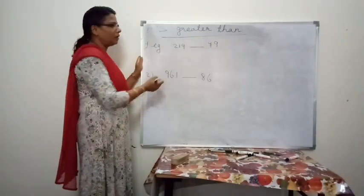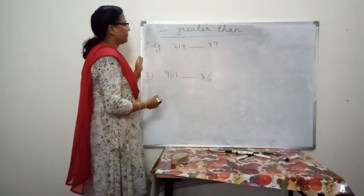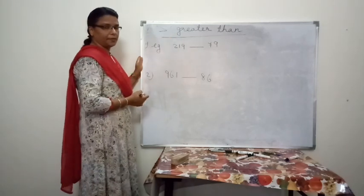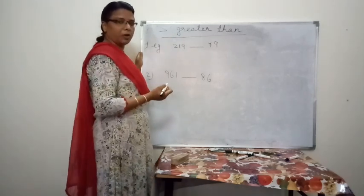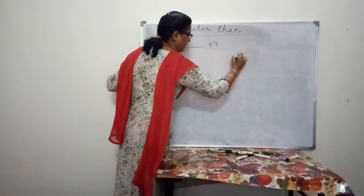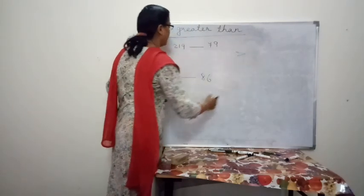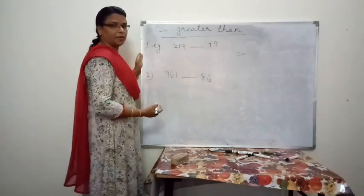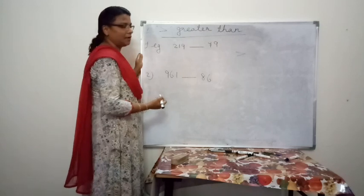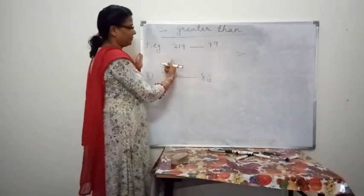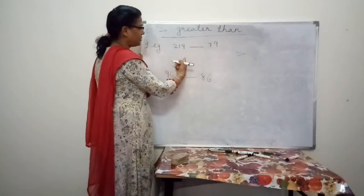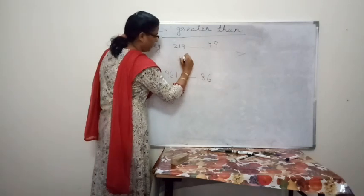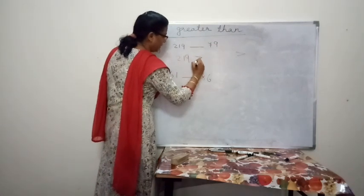First, we will learn about greater than. If a number is bigger than another number, we use the symbol greater than. For example, 219 and 79. Which number is greater? 79 has 2 digits, whereas 219 has 3 digits. So we write: 219 is greater than 79.